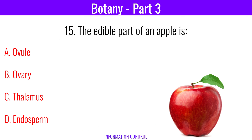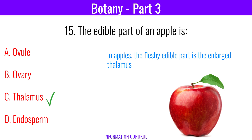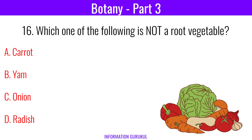The edible part of an apple is? Thalamus. In apples, the fleshy edible part is the enlarged thalamus. Which one of the following is not a root vegetable? Onion.